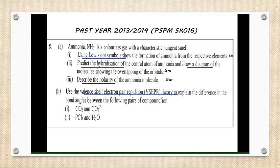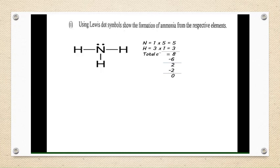Question 8a part 3: describe the polarity of the ammonia molecule. This is worth five marks, so we need to explain more about this ammonia molecule. Question 8b: use the Valence Shell Electron Pair Repulsion theory to explain the difference in bond angles between the following pairs of compounds or ions.